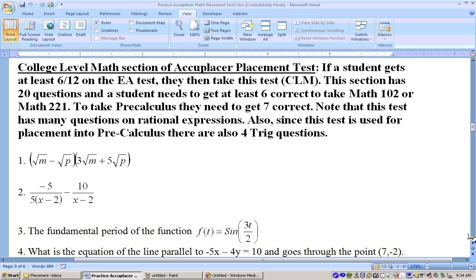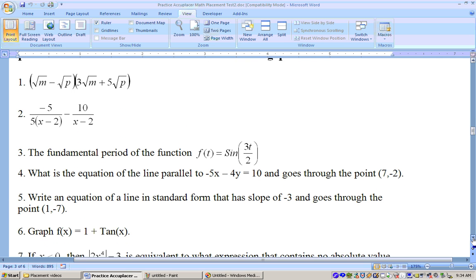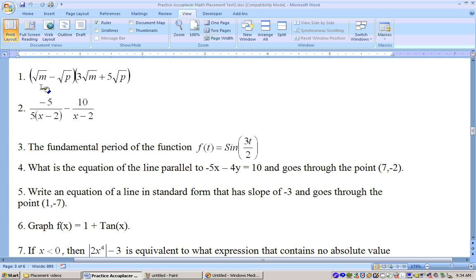So the first question here is actually to simplify this quantity, the quantity square root of m minus the square root of p times quantity 3 square roots of m plus 5 square roots of p. And what we'll need to do is FOIL this together. In other words, take the first, the outer, then the inner, and the last. Distribute the square root of m through, then distribute the minus square root of p through this set of parentheses and combine like terms.